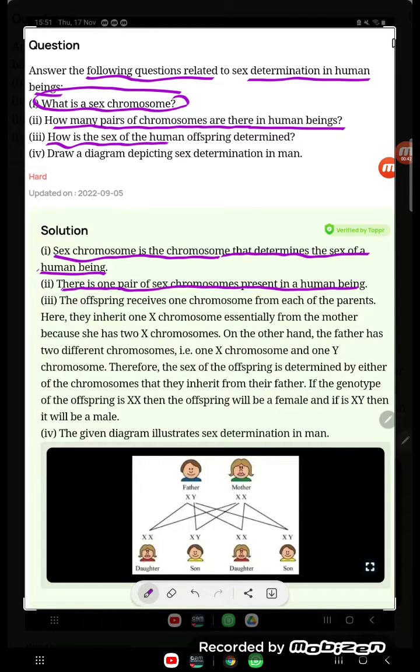How is the sex of the human offspring determined? The offspring receives one chromosome from each of the parents. Here, they inherit one X chromosome essentially from the mother because she has the two X chromosomes.